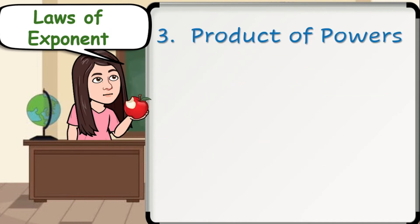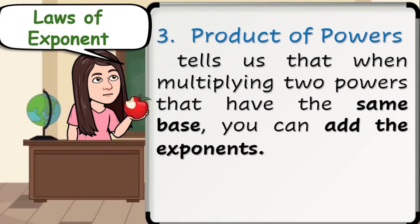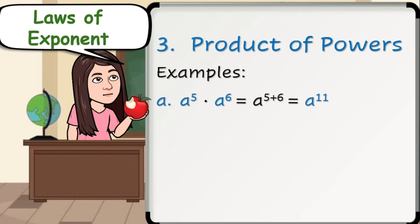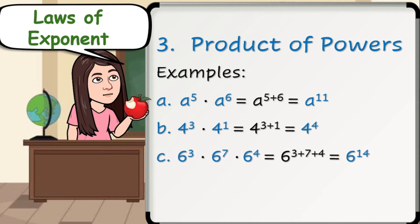Number 3: product of powers, which tells us that when multiplying 2 powers that have the same base, you can add the exponents. Mathematically speaking, a raised to m times a raised to n is equal to a raised to m plus n. Letter A: a raised to 5 times a raised to 6 is equal to a raised to 5 plus 6, which is a raised to 11. Example B: 4 cubed times 4 raised to 1 is equal to 4 raised to 3 plus 1, which is 4 raised to 4. Example C: 6 cubed times 6 raised to 7 times 6 raised to 4 is equal to 6 raised to 3 plus 7 plus 4, which is 6 raised to 14.